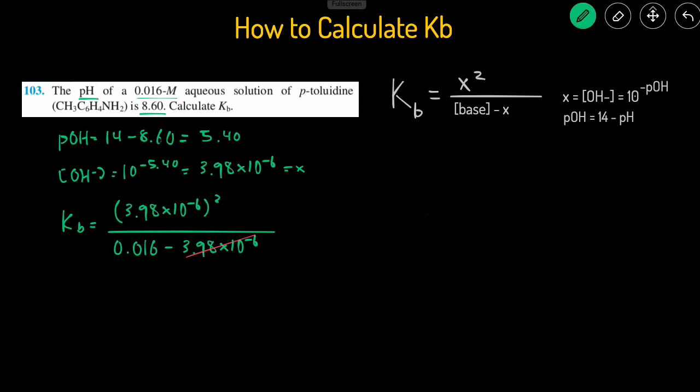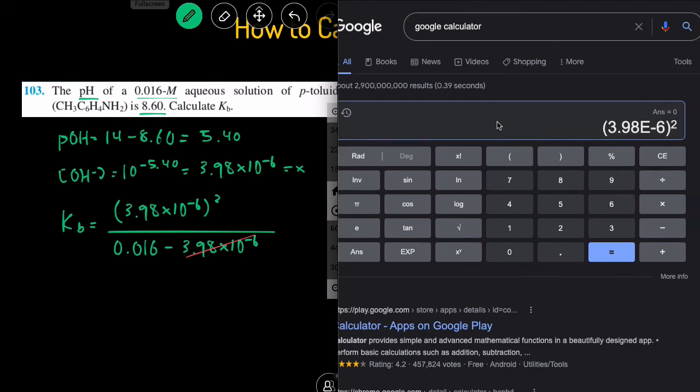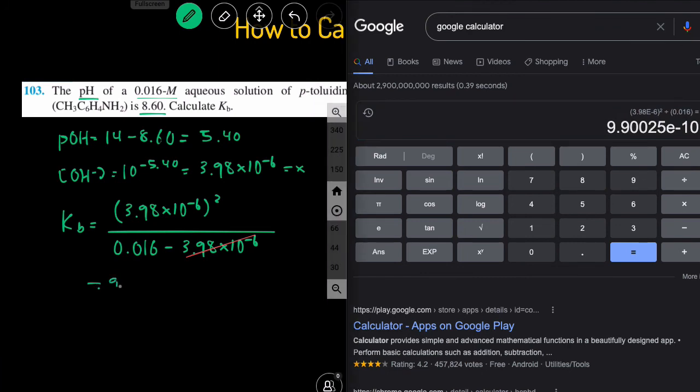Now let's plug this into the calculator and see what the final Kb is equal to. So you have 3.98 times 10 to the negative 6, squared, and then divide that by 0.016. And that gives us a Kb value of 9.9 times 10 to the negative 10.